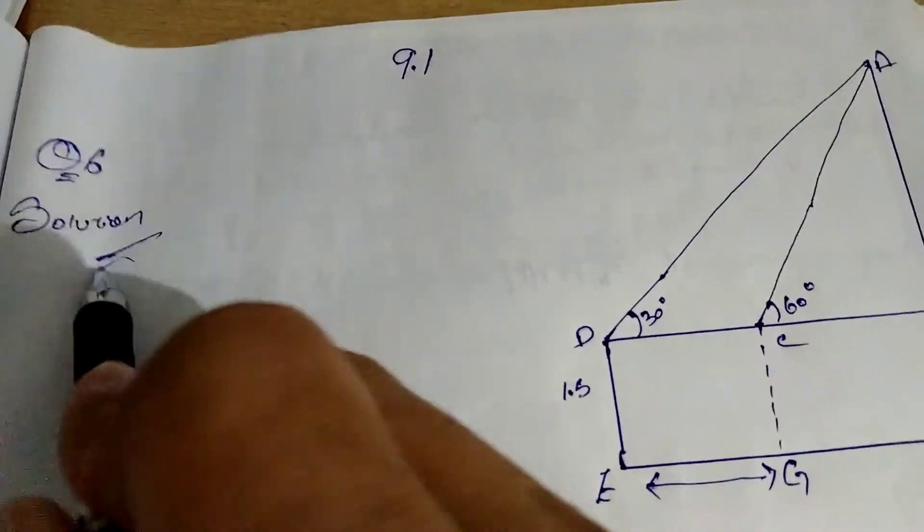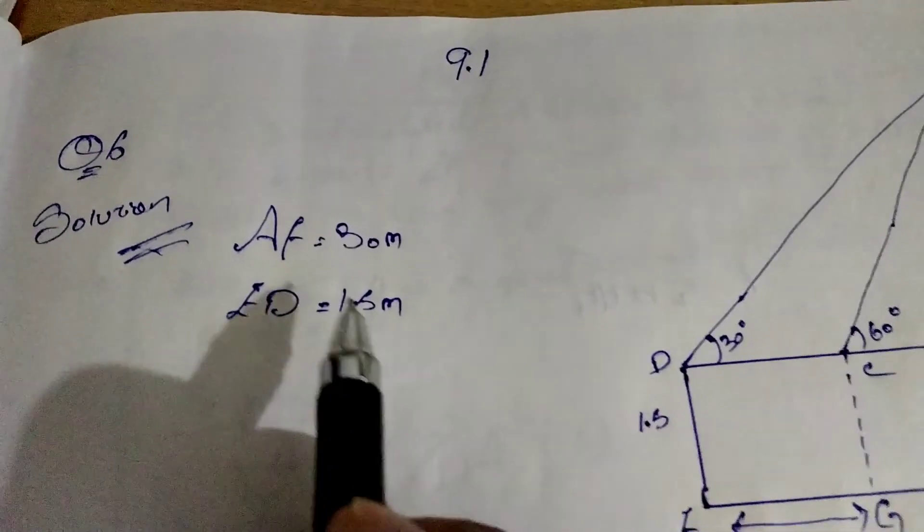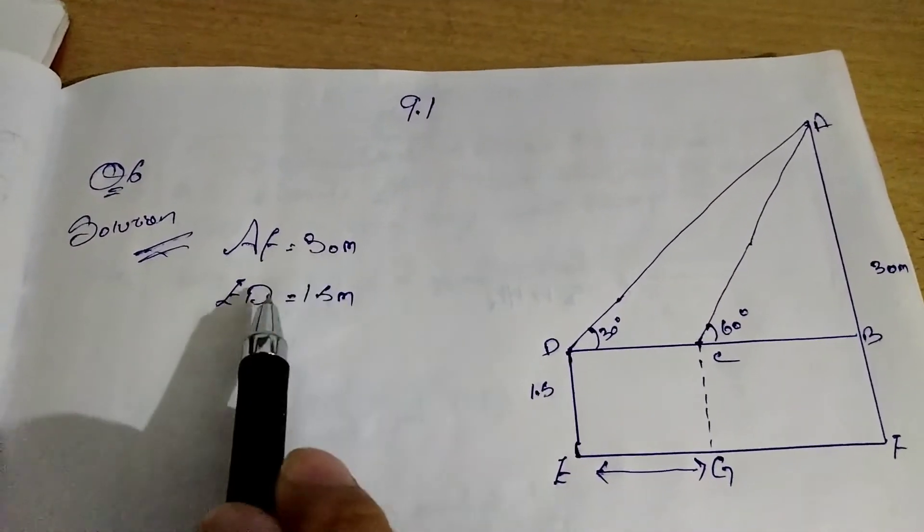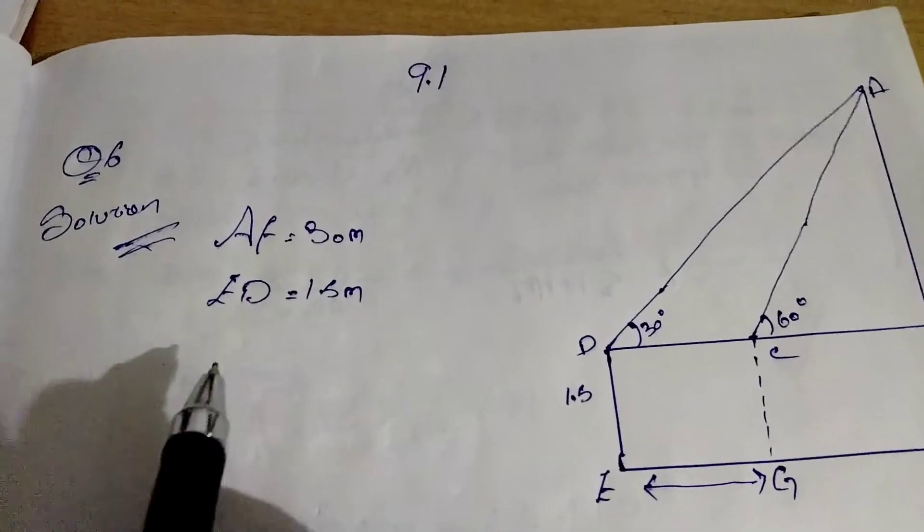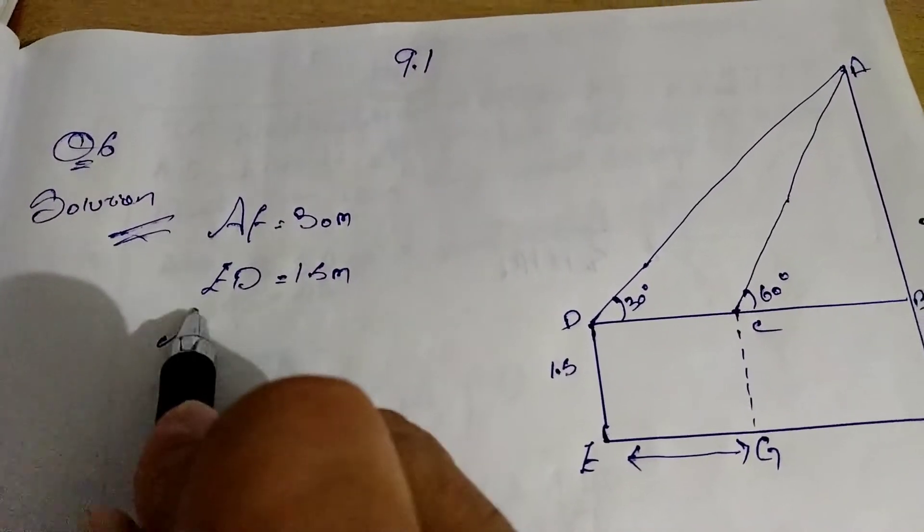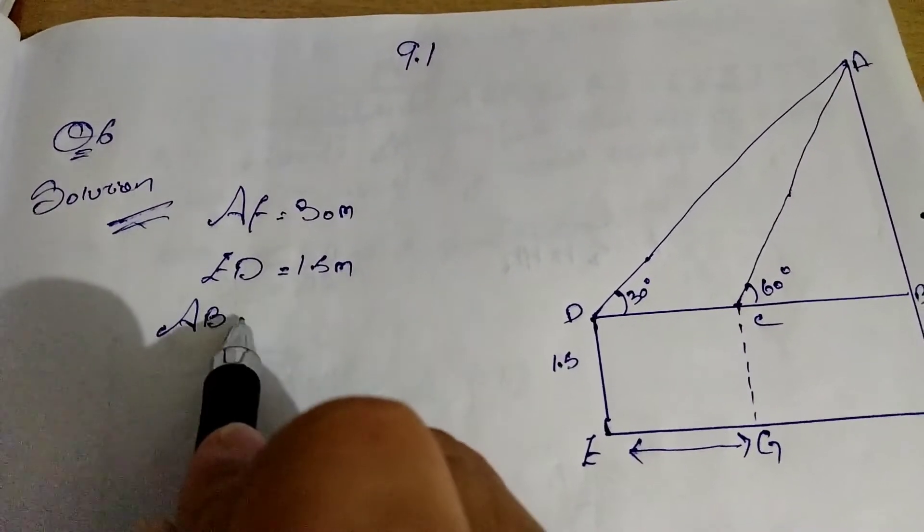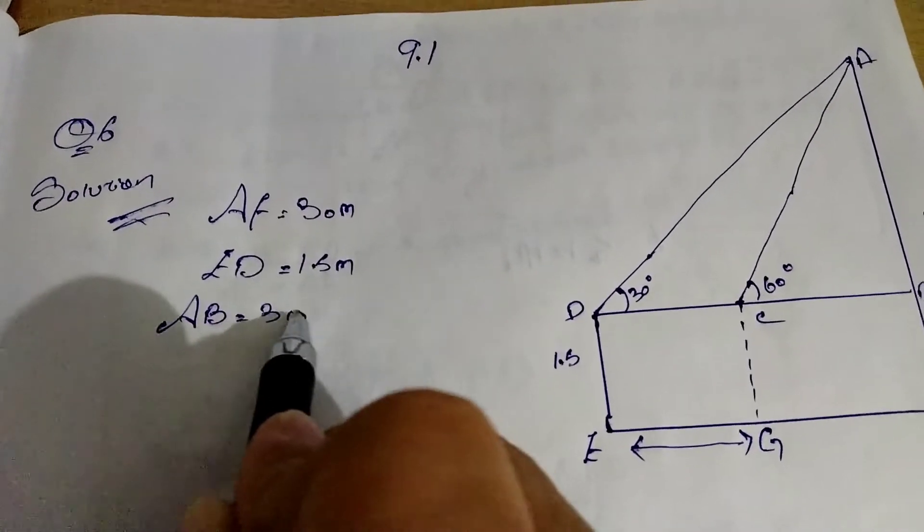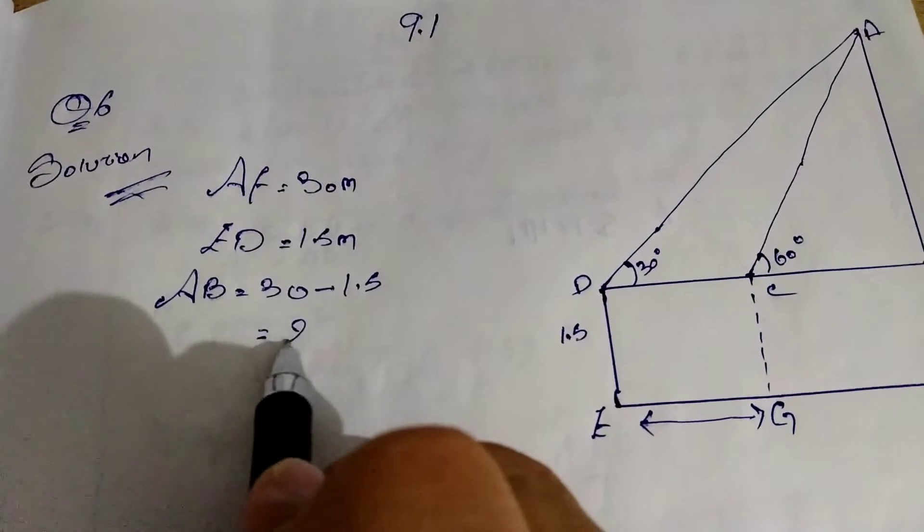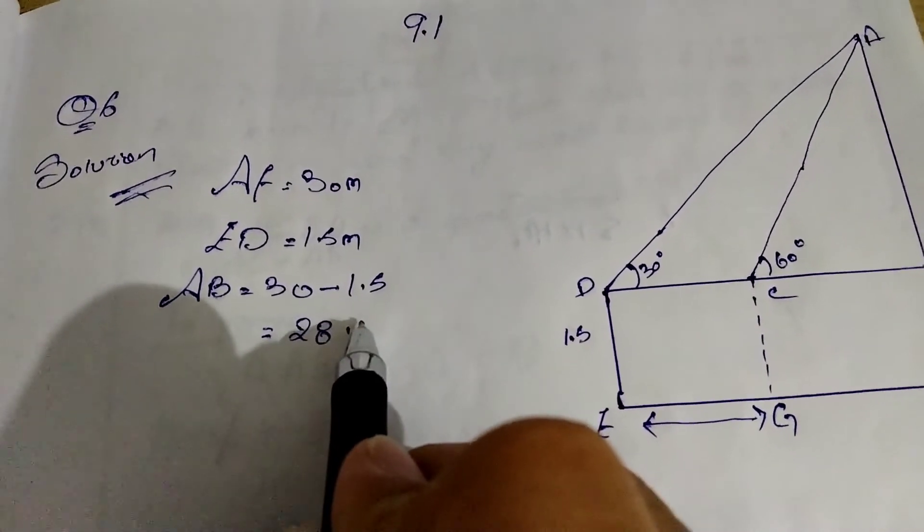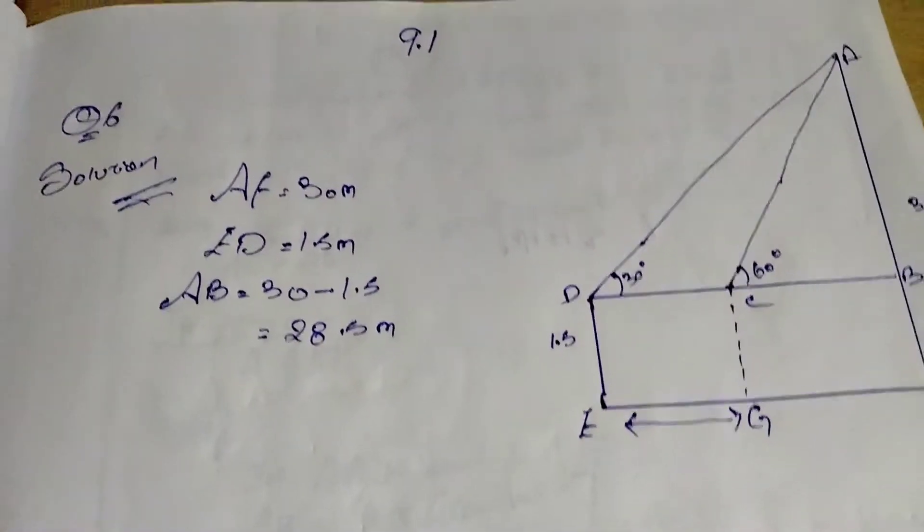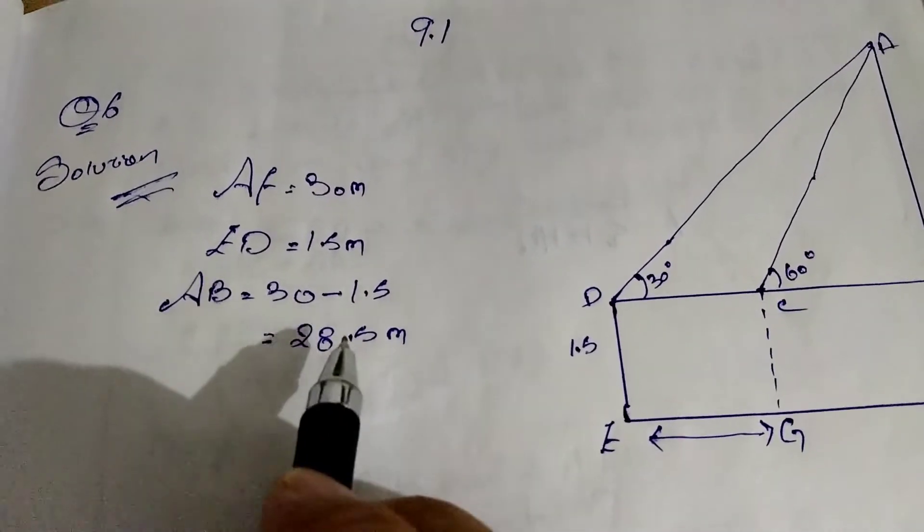Let's start with the details that is given. I have just wrote it down. That is the height of the building, AF is 30, the height of the boy, ED, 1.5. Like I said, the other half of the building, if you minus with the height of the boy, that is AB equal to 30 minus 1.5. The remaining height of the building will be 28.5 meter. That is the other remaining portion of the building.